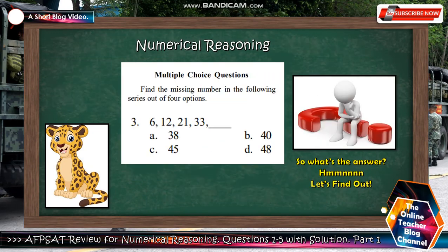Let's go to number 3: 6, 12, 21, 33. Letter A is 38, B is 40, C is 45, D is 48. So what's the answer? Let's find out.